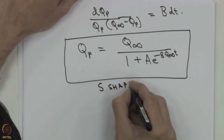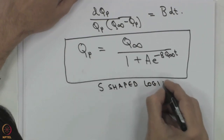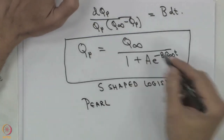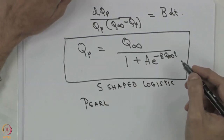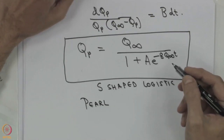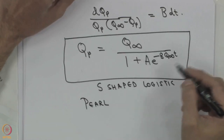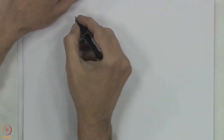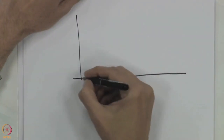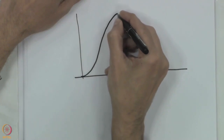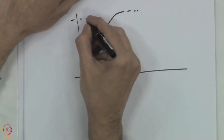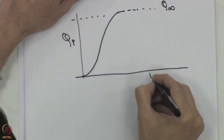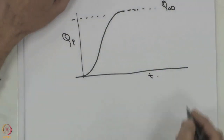This S-shaped curve is also called the Pearl curve, after statistician Raymond Pearl who initially proposed it to model growth in organisms — height, weight — and it has been used in a wide host of applications. The curve starts from near zero, rises, and approaches Q infinity asymptotically. This is Qp versus T — what is known as the S-shaped logistic curve.